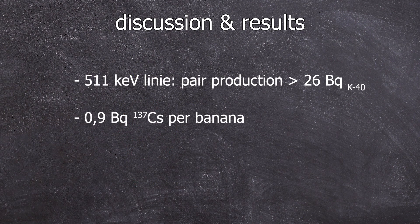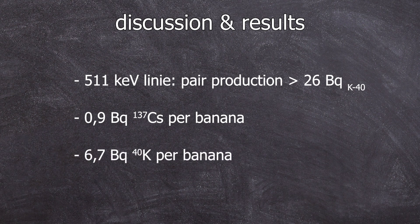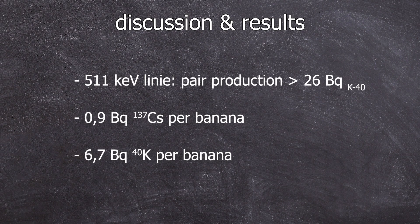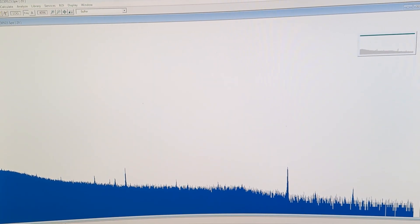0.9 becquerels of cesium-137 per banana, 6.7 becquerels of potassium-40 per banana, and small amounts of antimatter per banana. With that being said, goodbye.